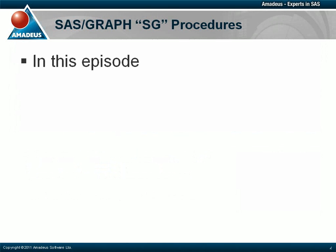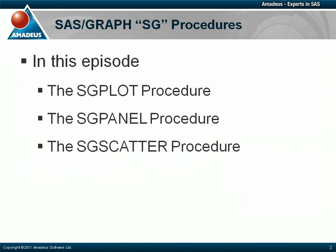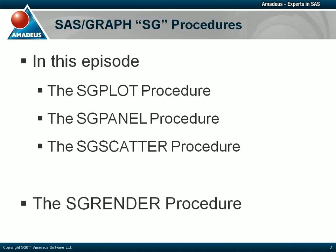In this episode we will focus on three of the statistical graphics, or SG, procedures: namely the SG plot procedure, the SG panel procedure, and the SG scatter procedure. There is a fourth procedure of note, the SG render procedure, which we will focus on in the next episode of this podcast series.